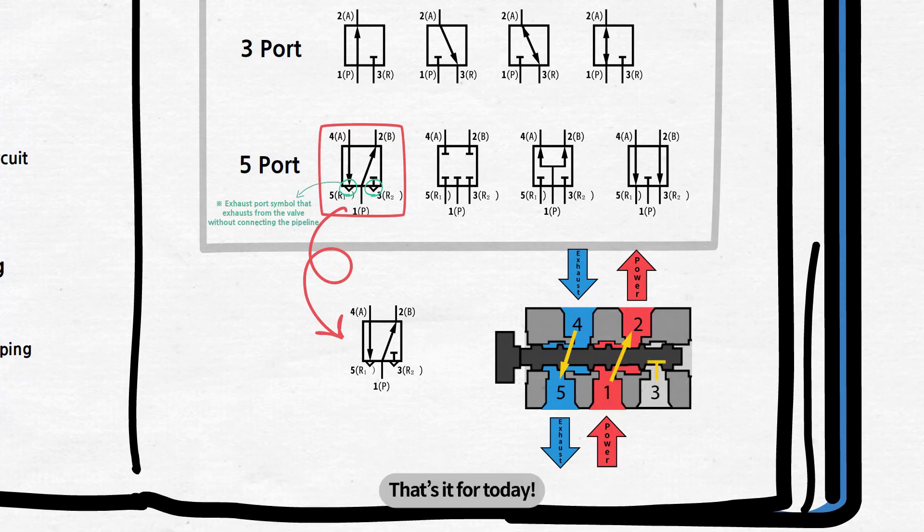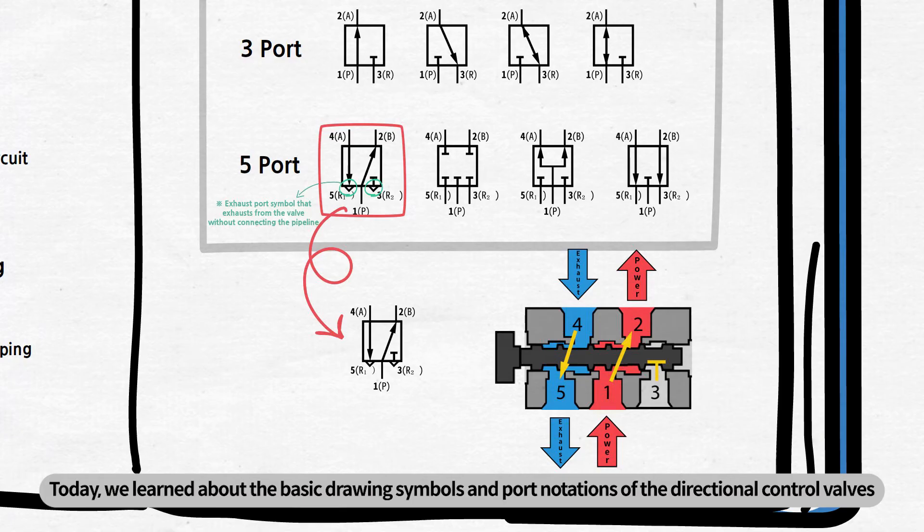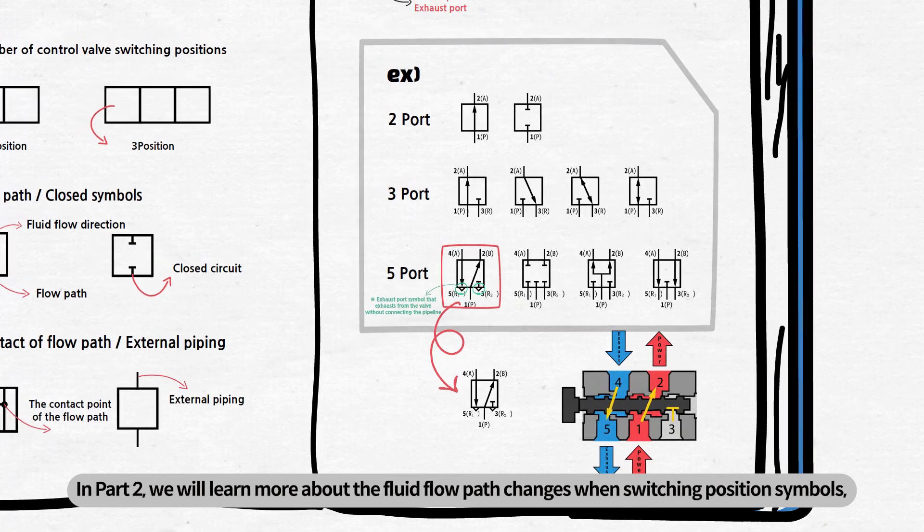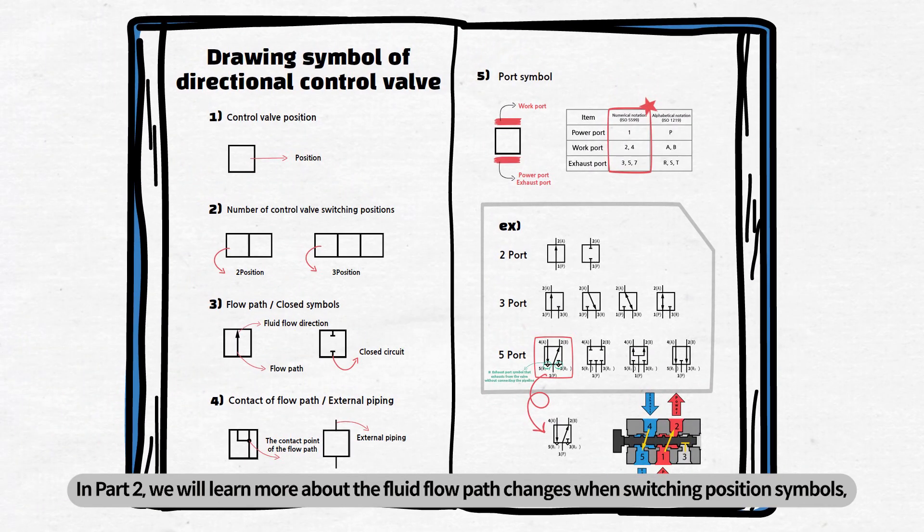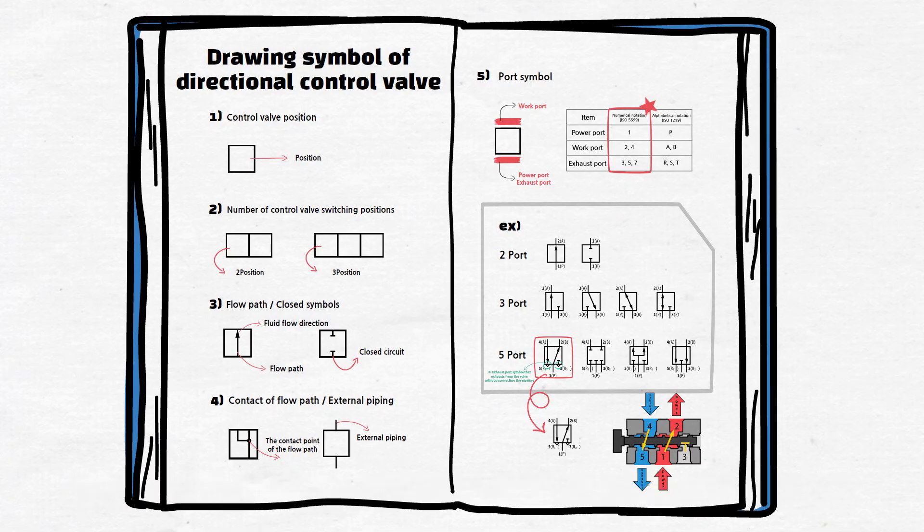That's it for today! Today, we learned about the basic drawing symbols and port notations of the directional control valves. In part 2, we will learn more about the fluid flow path changes when switching position symbols along with the various operating symbols of the valves.